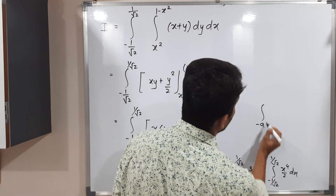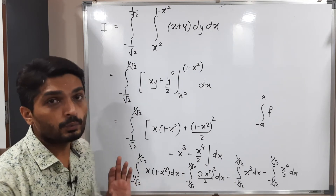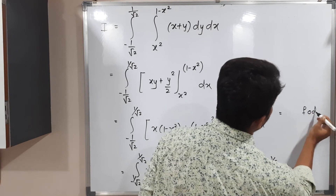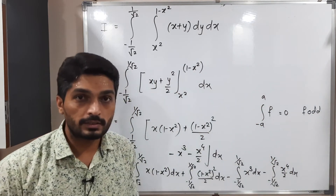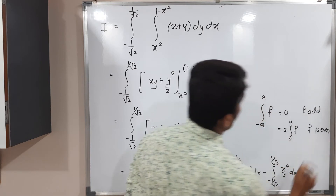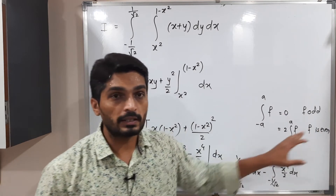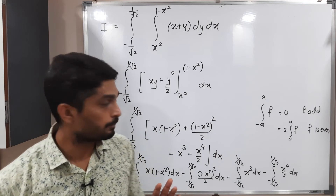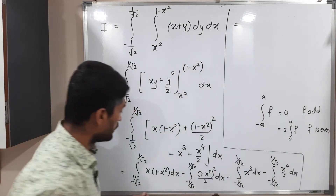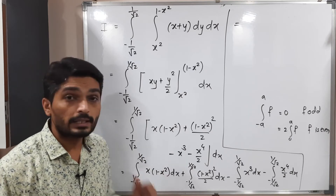We apply the result for symmetric limits −a to a: if f is an odd function, the integral is 0; if f is even, the integral equals 2∫₀ᵃ f dx. Now let us identify which functions are odd and which are even. x(1 − x²): x is odd, (1 − x²) is even, so odd × even = odd.